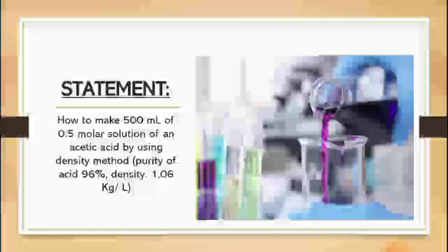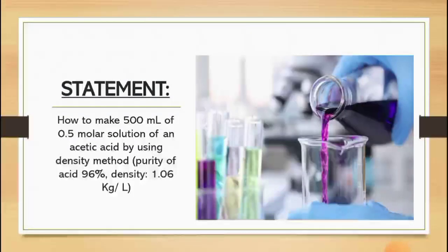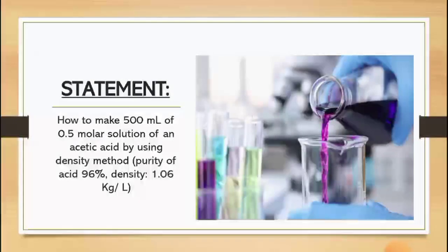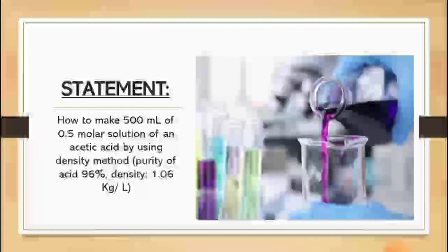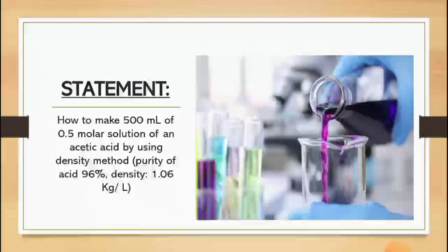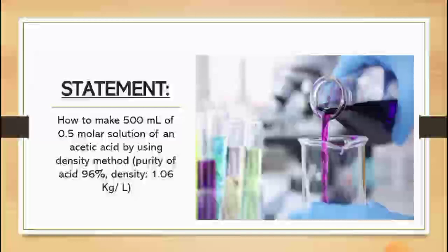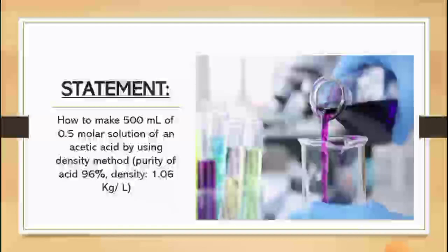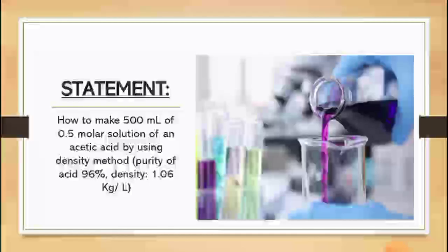The first point to know is the statement. In this point, we will know what we have to find in this experiment. The statement of the experiment is how to make 500 ml of 0.5 molar solution of an acetic acid by using density method. The purity of the acid is 96% and the density is 1.06 kg per liter.